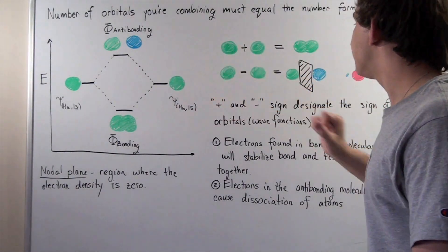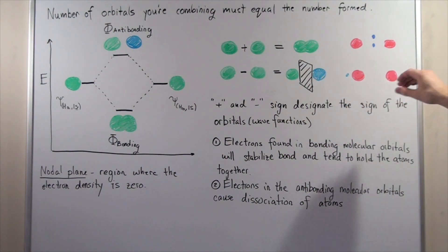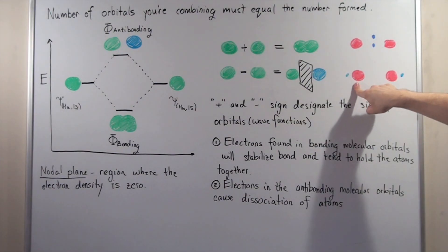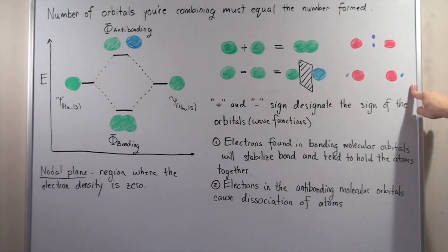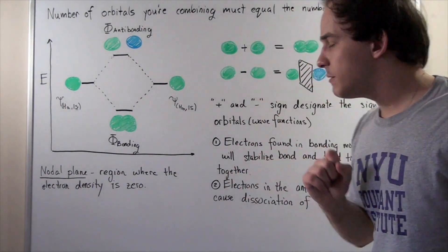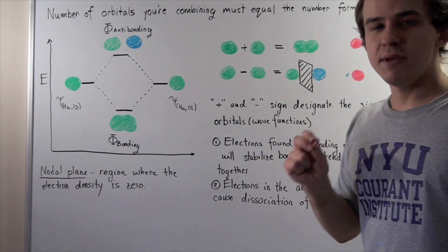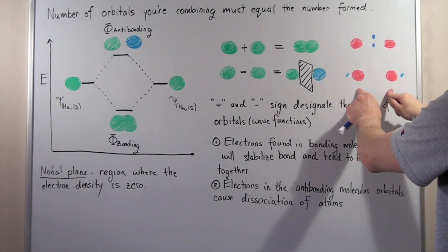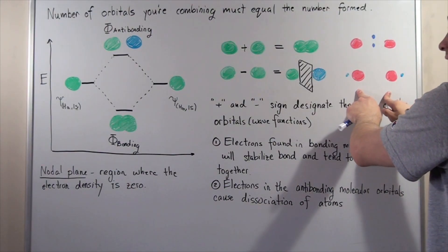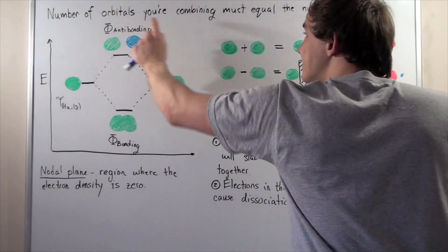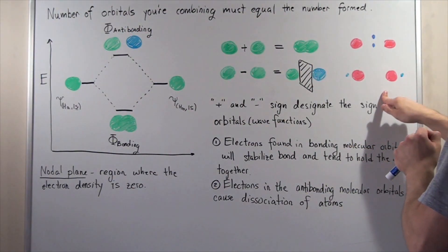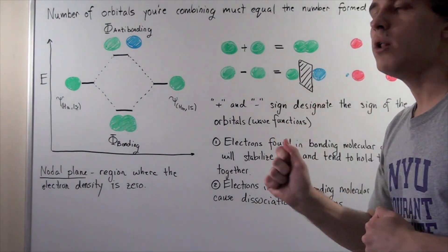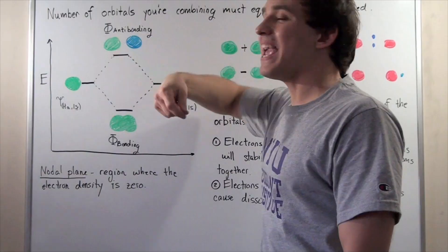Drawing out our proton-electron diagram: we have two protons, nucleus 1 and nucleus 2, with electrons. Because the electrons can never be found in the nodal plane region, there is nothing stabilizing the electrostatic repulsion between the two positively charged nuclei. In the anti-bonding case, the two nuclei will actually repel one another, the bond will be broken — and that is exactly why it is called anti-bonding.